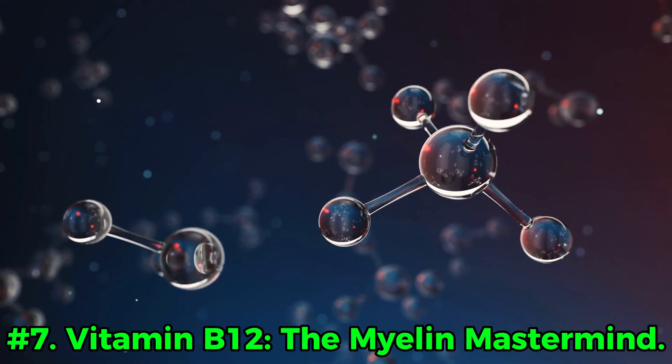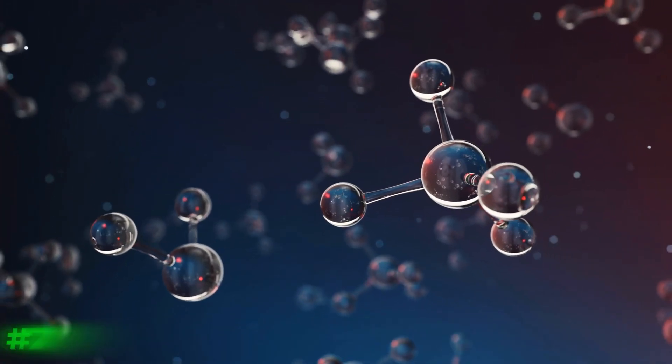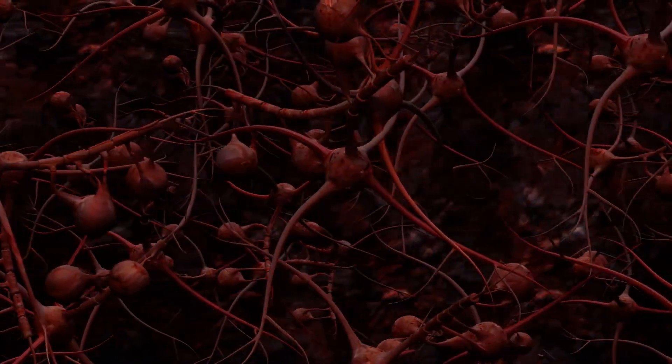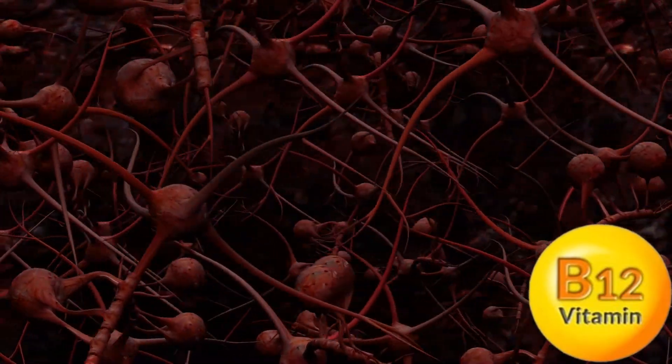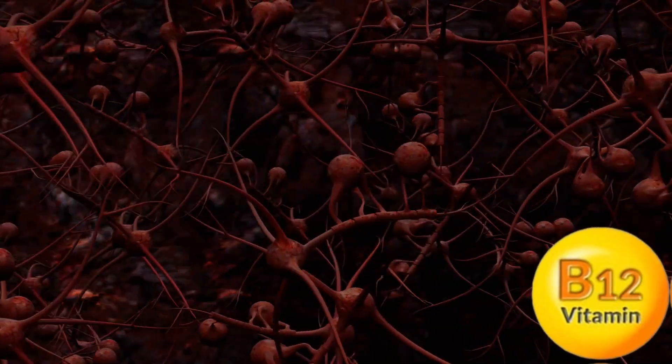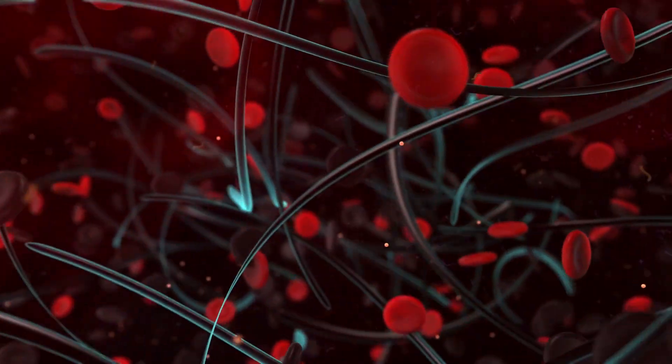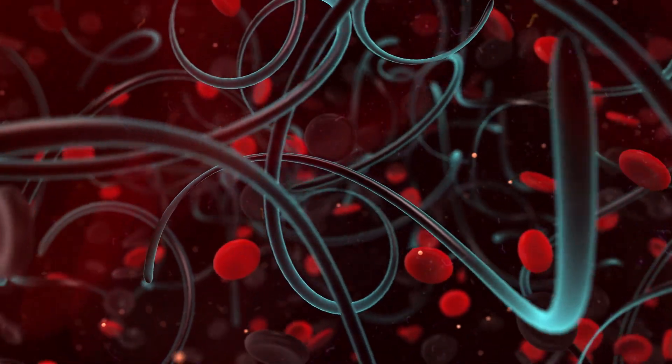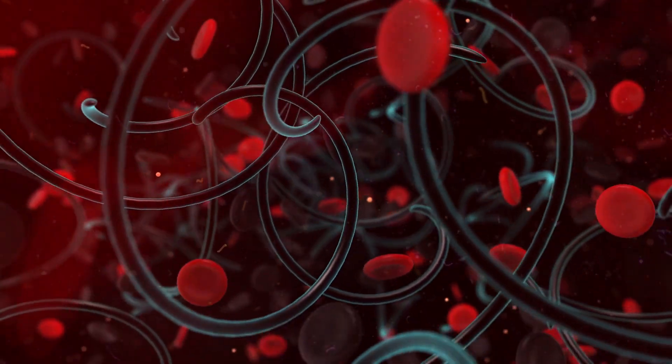Number 7: Vitamin B12, the myelin mastermind. Imagine your nerves are like internet cables, and B12 is the insulation that keeps the signal running fast and smooth. Without this insulation called the myelin sheath, your body's communication system starts glitching like a bad Zoom call.